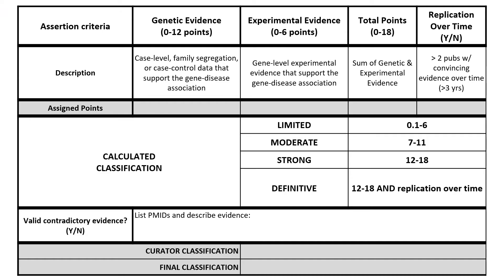This video will provide an overview on how to assess genetic and experimental evidence and how to use the ClinGen scoring metric to guide you toward a preliminary gene disease classification. We have developed a scoring matrix to make the process of arriving at a classification more transparent. The scoring matrix focuses primarily on genetic and experimental evidence. Genetic evidence refers to case-level, family segregation, or case-controlled data that supports the gene disease association, and experimental evidence refers to gene-level functional evidence supporting disease causality. The idea of replication over time serves as a differentiator between the strong and definitive categories. This criteria is met if there are at least two independent clinical publications supporting the gene disease association and no valid contradictory information reported over at least a three-year period.